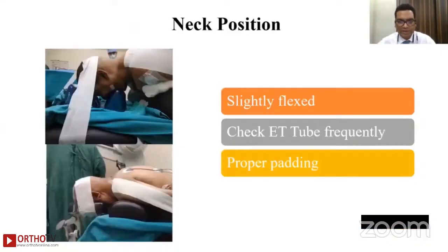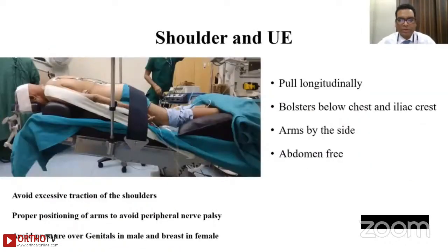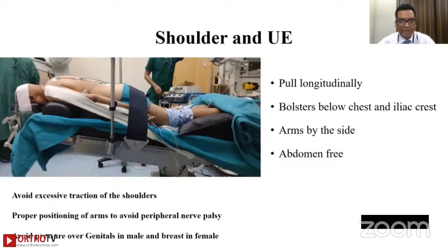The neck should be slightly flexed in prone position. Check the endotracheal tube frequently, and proper padding is important. The anesthetist uses a torch because if the surgical curtain is on, it's not possible to check the eyes and neck position. For the shoulder and upper limbs: pull upper limbs longitudinally, place a bolster below the chest and iliac crest, keep arms by the side, ensure the abdomen is free, avoid excessive shoulder traction, and position the arms properly to prevent peripheral nerve palsy. Avoid pressure over genitalia in males and the breast in females.